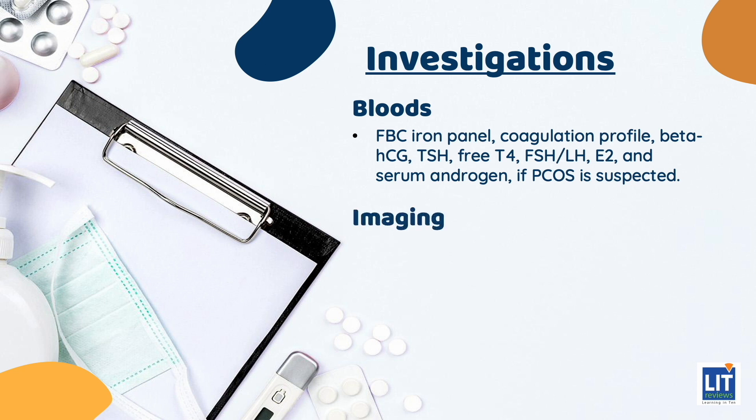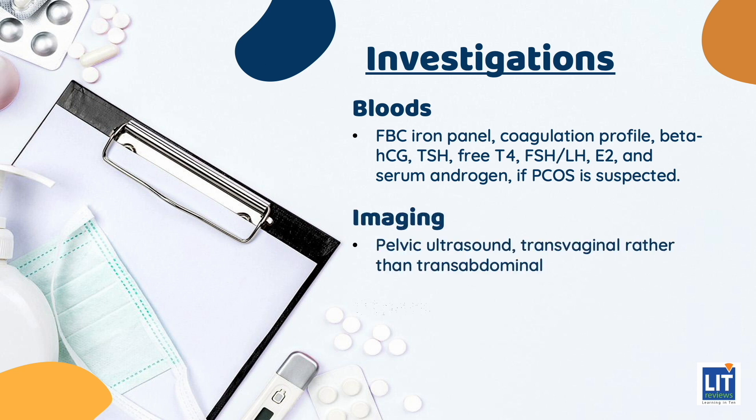For imaging, pelvic ultrasound is the first line to assess for structural causes such as endometrial polyps. Transvaginal rather than transabdominal ultrasound should be conducted when possible. For other investigations, this includes a pap smear and endometrial biopsy. If necessary, a hysteroscopy and D&C can be considered.